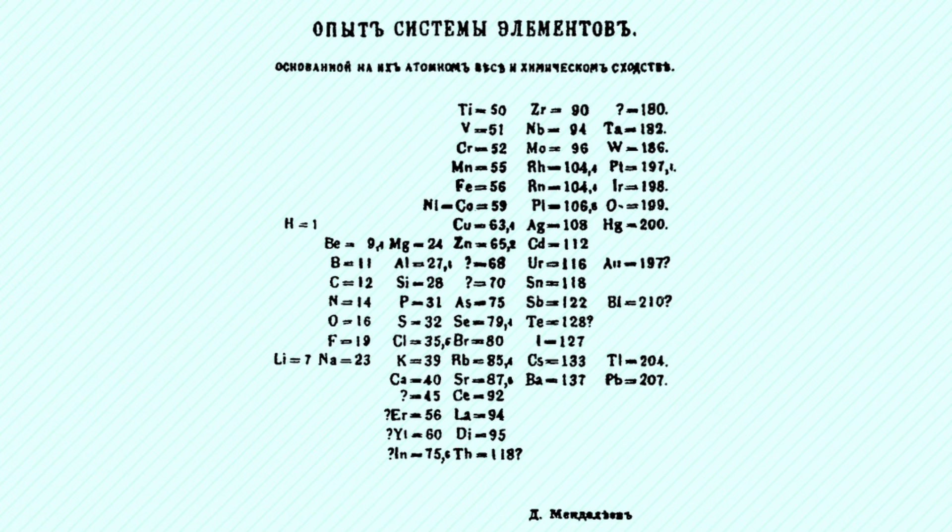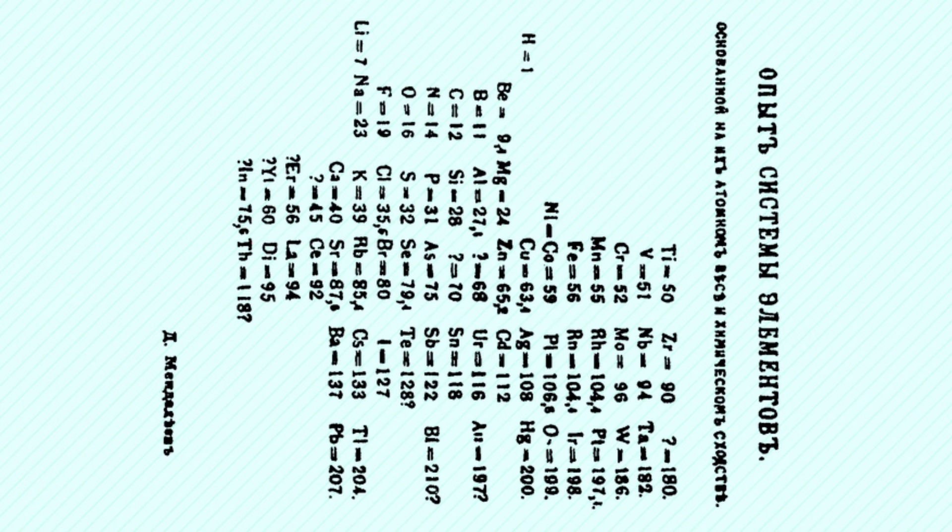This may sound familiar. He illustrated this in the rudimentary, but revolutionary periodic table of all known elements at the time. There were about 60, and it looked like this. Not exactly what's hanging in your chemistry class, but if you flip it 90 degrees, you can see the origins of the periodic table of the elements.